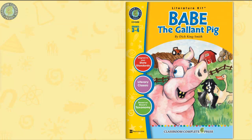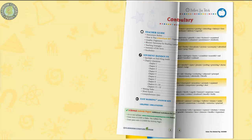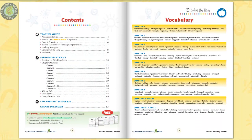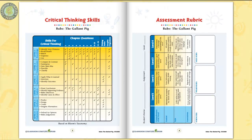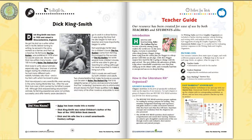This literature kit on Babe, the Gallant Pig by Dick King-Smith includes discussion questions that engage students to think deeper about the text. Fifty-five pages chocked full of a variety of scaffolding strategies incorporated in our Before You Read worksheets for each chapter section, along with vocabulary prompts to prepare your students for the reading with rubrics, teacher guide, and author biography.